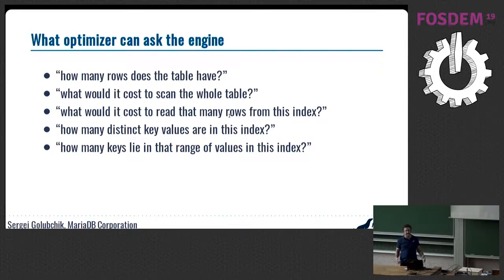What statistics does optimizer need? When an optimizer optimizes your query, it needs to know something about the data. Traditionally, the optimizer was asking the engine different questions like: how many rows does this table have? What would it cost to do the full table scan? Cost is in arbitrary cost units, not in microseconds or CPU cycles. How much would it cost to read a thousand values from index number three? Then optimizer would compare this cost with the cost of the full table scan. Or how many distinct values are in the index? If the index has 10 million rows and there are one million distinct values, then optimizer would assume every value is present about 10 times. Or how many index values lie in the range between say 10,000 and 11,000, then compare with the full table scan.